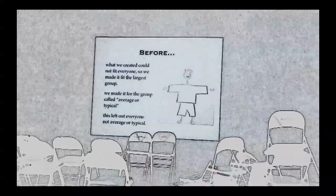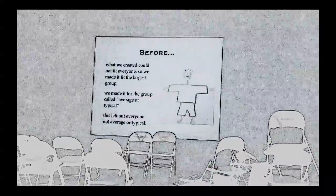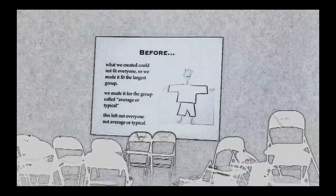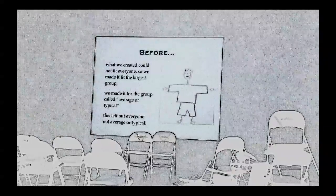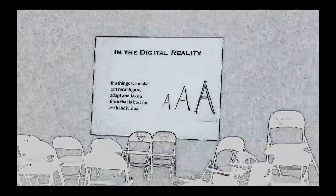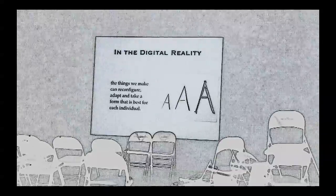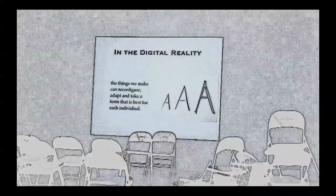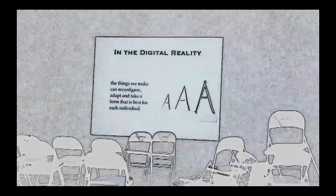Before, what we created could not fit everyone, so we made it fit the largest group. We made it for the group called average or typical. This left out everyone not average or typical. In the digital reality, the things we make reconfigure, adapt, and take a form that is best for each individual.